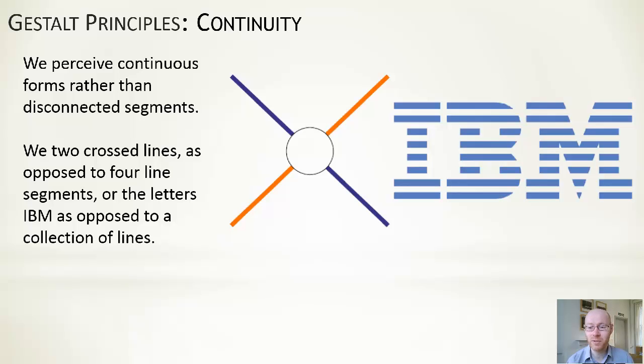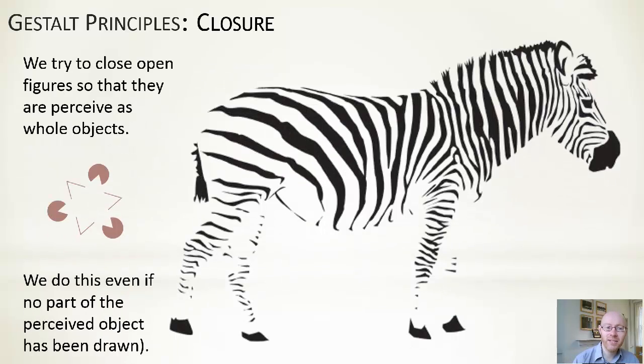Closure is another interesting one. We try, or our brain is wired up to try to close open figures so that we perceive them as whole objects. So the zebra that we have here, we quite easily see it as a zebra even though there is no border surrounding it.